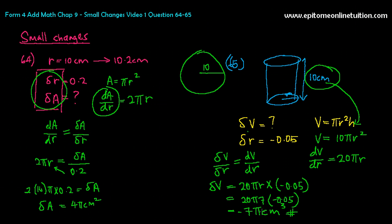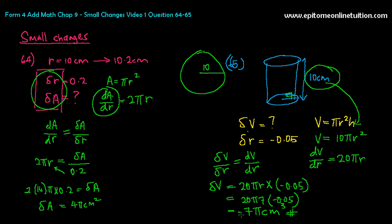So for this cylinder, originally the radius is 7. When it decreases by 0.05 to 6.95, the volume also decreases — the cylinder is getting thinner while the height stays the same, so the volume reduces. The negative sign tells you it reduces by 7 pi centimeters cubed. Please understand the context of what you're doing. There are a lot of problem-solving aspects in small changes and rates of change. We'll do question 66 in the following video.